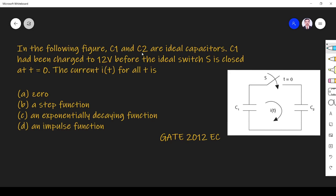the following figures C1 and C2 are ideal capacitors. C1 had been charged to 12 volt before the ideal switch S is closed at T equals 0. The current I(t) for all t is what they are asking.